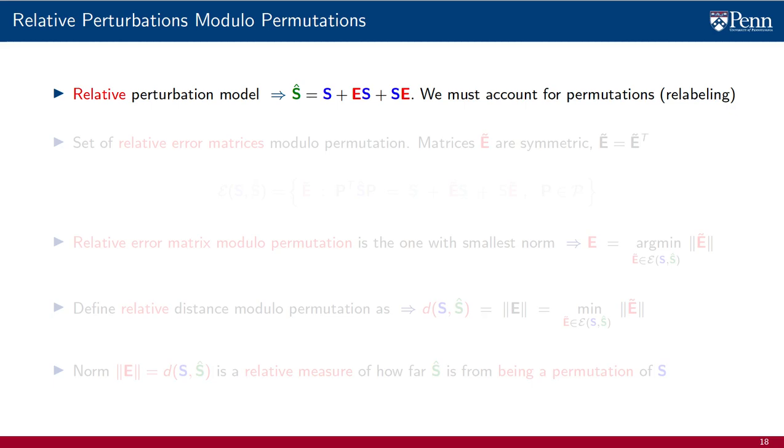This is fine, but we know we must account for permutations because relabelings are irrelevant. We also know how to do this. We introduce the set of relative error matrices modulo permutation, made up of the symmetric matrices E tilde, that allows us to write permutations of the shift operator S hat, as sums of the form S plus E tilde times S plus S times E tilde. For each possible permutation P, we have a different error matrix E, relating shift operator S to shift operator S hat.